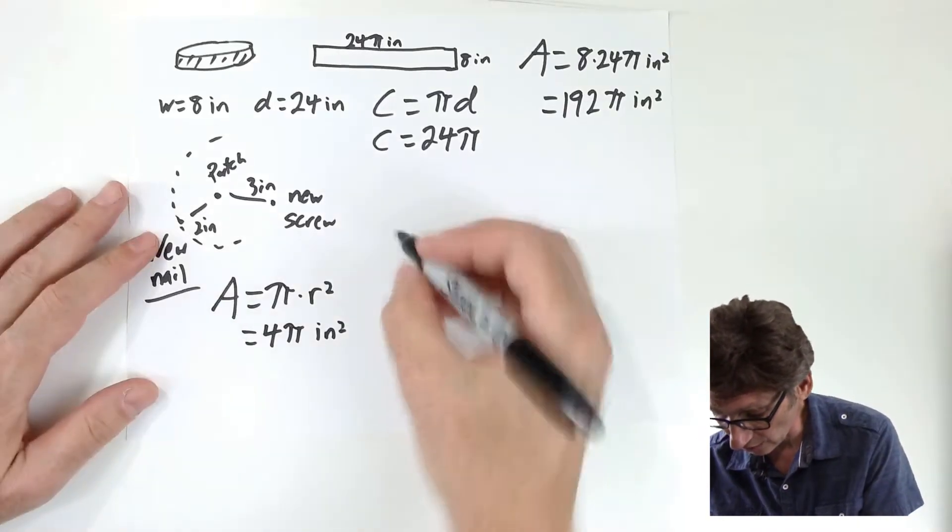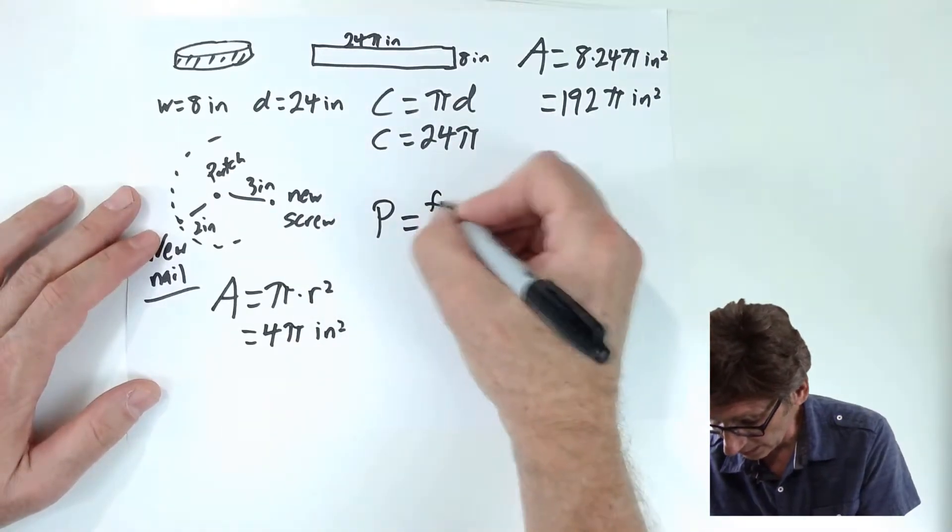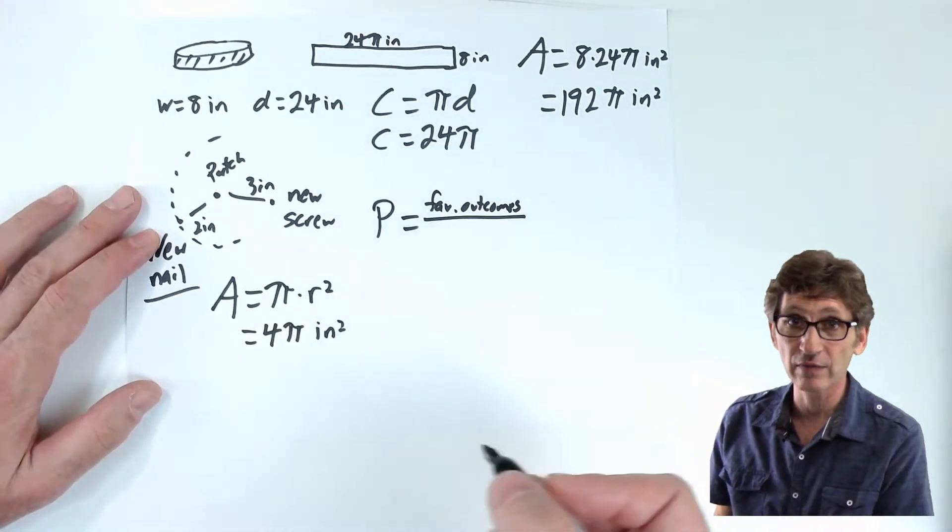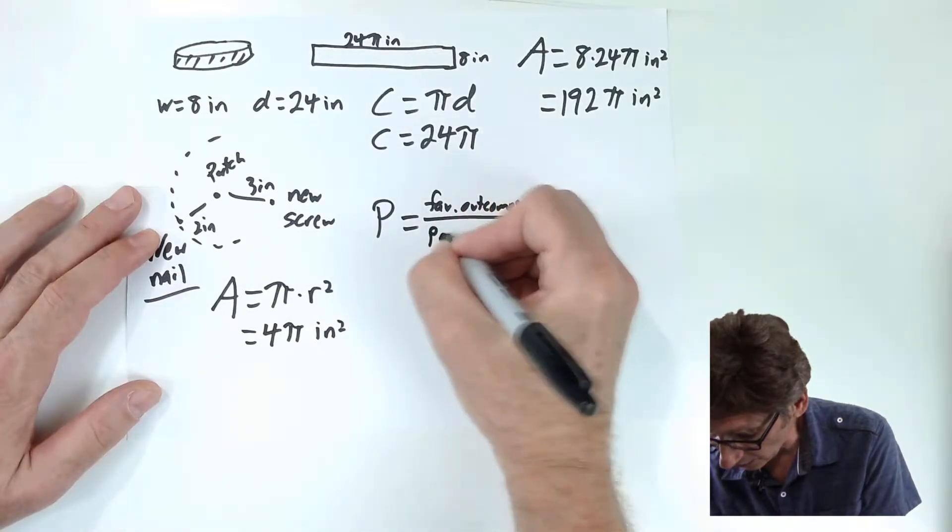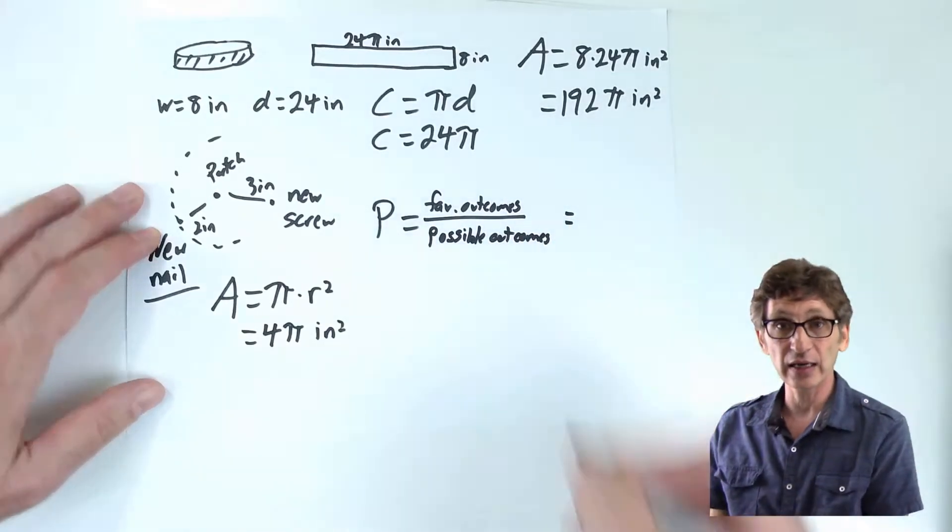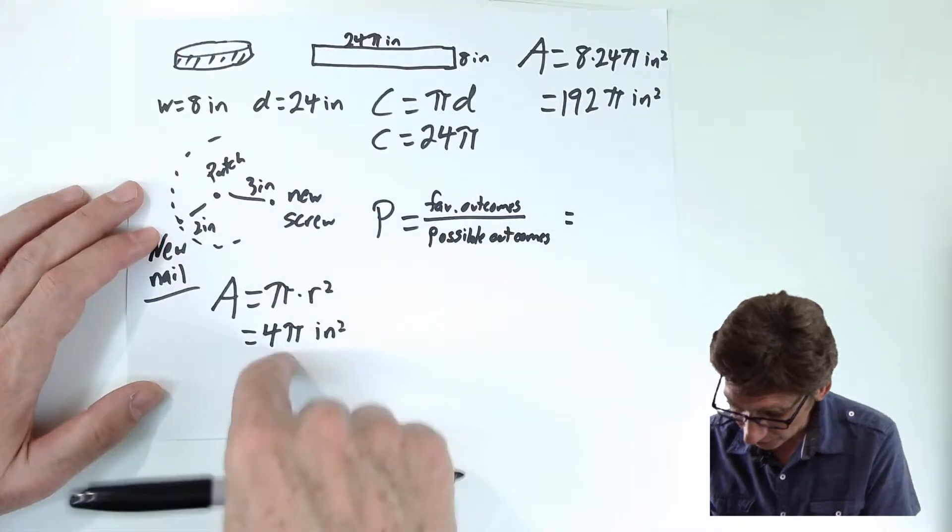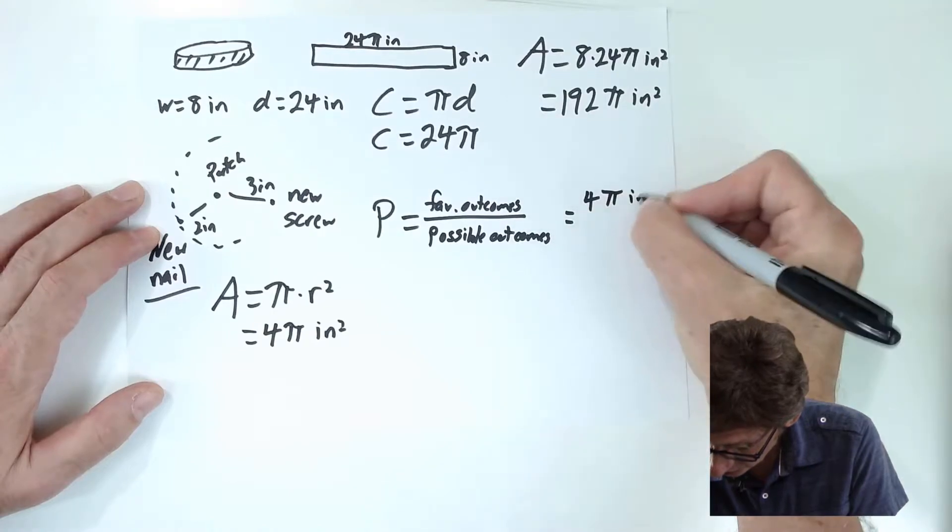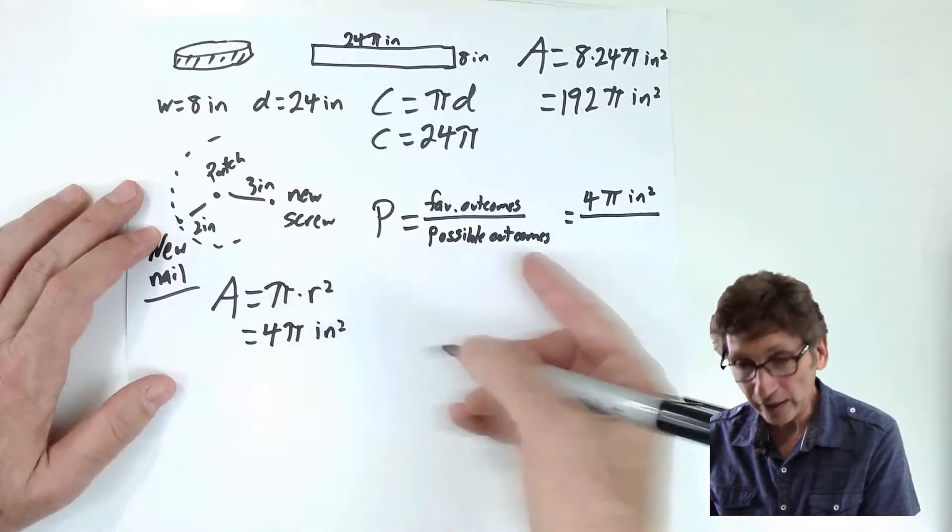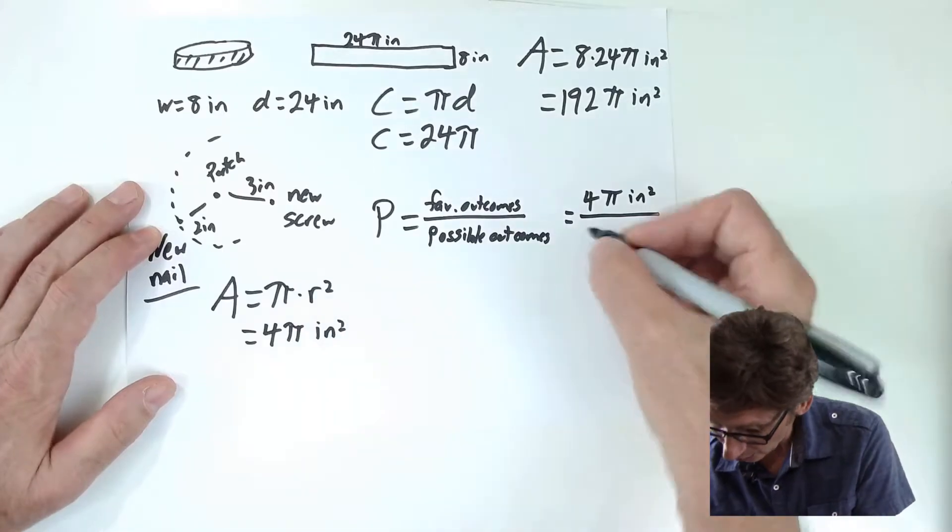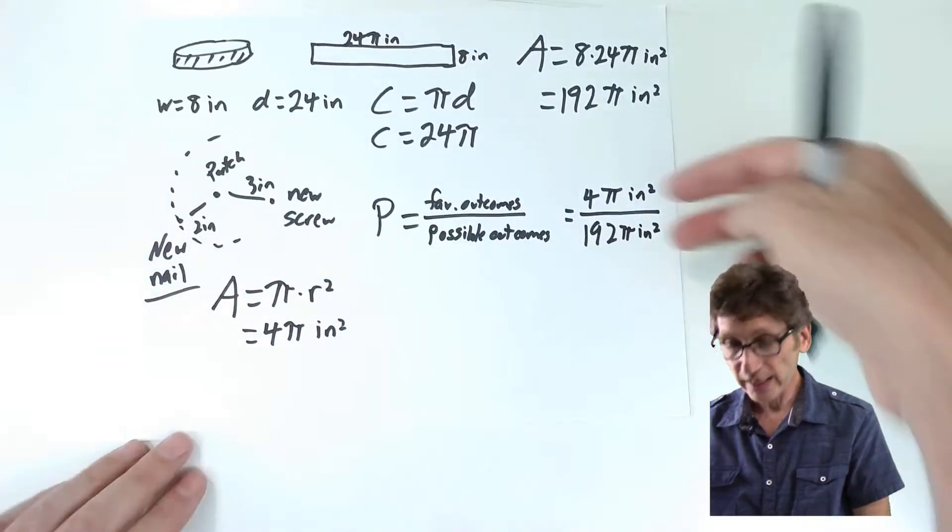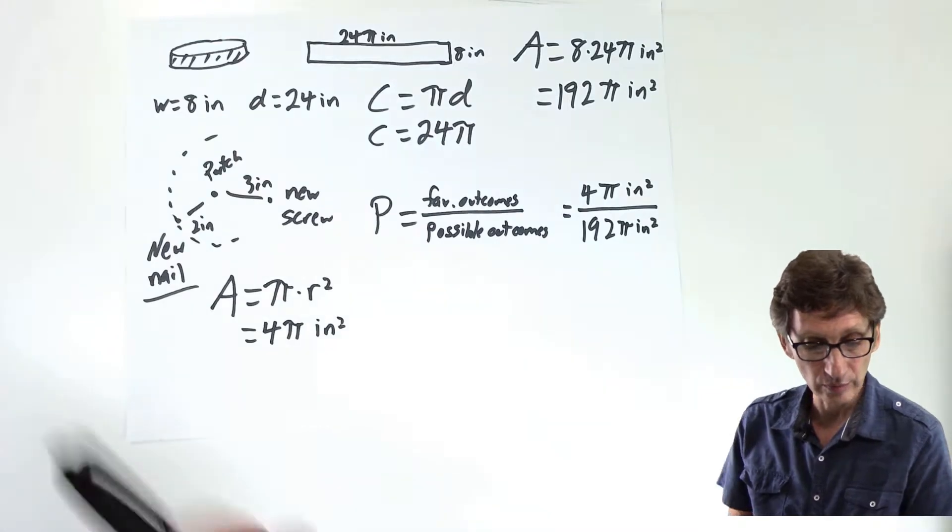So this is a ratio. The probability is a ratio of favorable outcomes. I know it's weird to say favorable outcomes because getting a nail on your tire is not very favorable over possible outcomes. Since we can't count these, we are using area. So my favorable outcomes, four pi inches squared. Those are the outcomes that fall within the target area. I could have an outcome anywhere on that tire, which is my 192 pi inches squared. This is the probability.